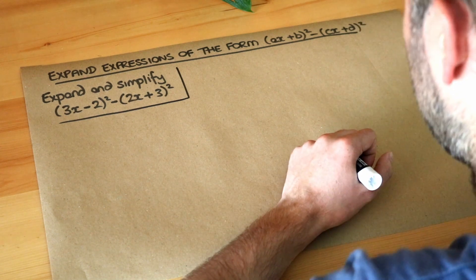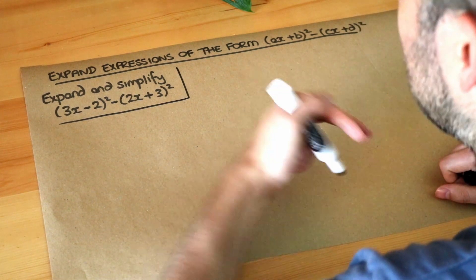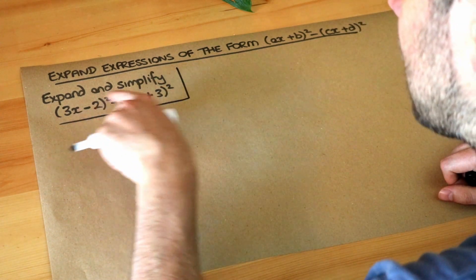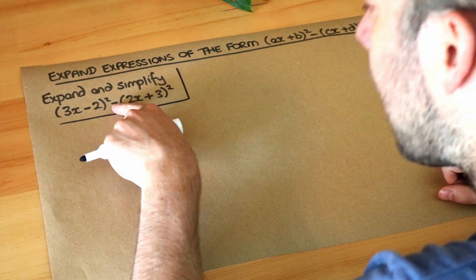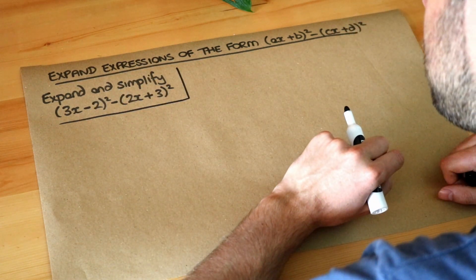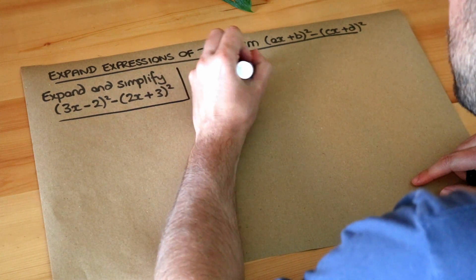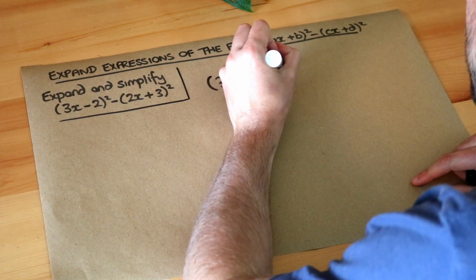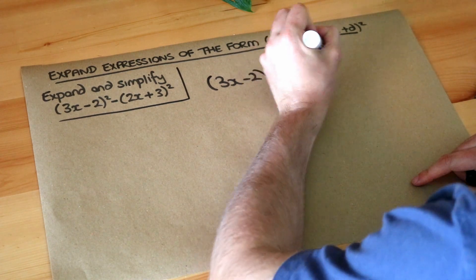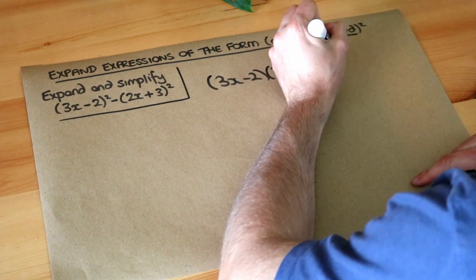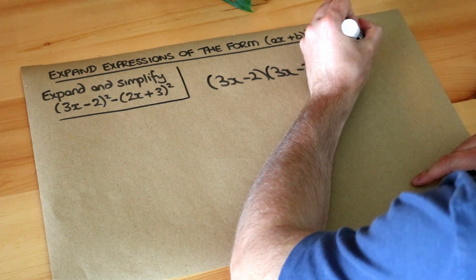Now there's actually two ways of doing this. I'm going to do what might seem the most obvious way and expand each of these brackets first and then do the subtraction. So I'm just going to write these brackets repeated because when you square a bracket it just means the bracket multiplied by itself, minus (2x+3) times (2x+3).